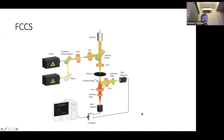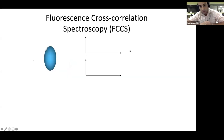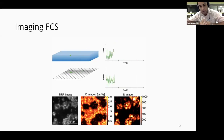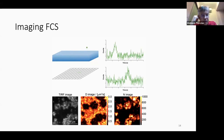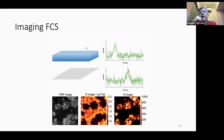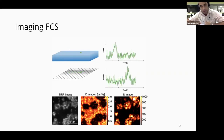The last topic I want to address is fluorescence cross-correlation spectroscopy (FCCS). It is very similar to FCS, but we use two different lasers to excite two different fluorophores — red and green, for example. We do the same filtering by pinhole but separate the emitted light into two detectors, one detecting short wavelengths and one detecting long wavelengths, then cross-correlate the two signals.